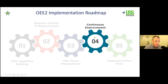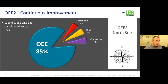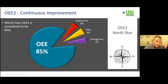Moving on to continuous improvement — this is the fun part of OEE. The North Star for OEE is generally accepted to be 85%: running the machine at 85% of its capacity with 15% taken out for losses. Generally we like to see unplanned losses at 5% and planned losses at 10% — changeovers and planned maintenance at around 5% each. That gives us a machine operating at good efficiency with predictable performance.